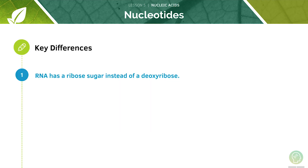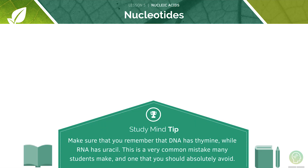Here are some key differences between DNA and RNA. First, RNA has a ribose sugar instead of a deoxyribose sugar. RNA also has uracil as a base instead of thymine. Make sure you remember this key difference: DNA has thymine while RNA has uracil — this is a really common mistake that many people make and one that you should absolutely avoid.